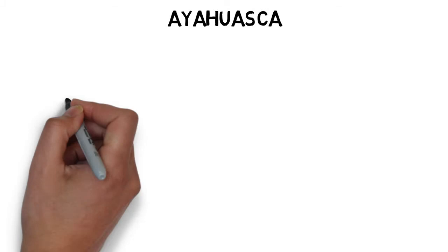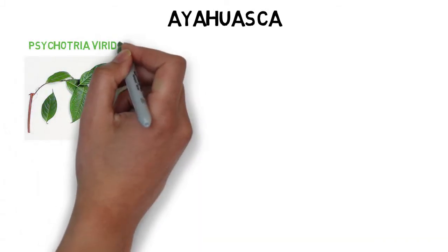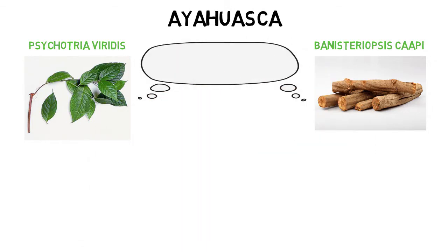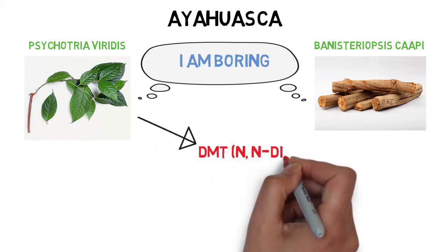Ayahuasca is actually a combination of the leaves of one plant, Psychotria viridis, and the vines of another, Banisteriopsis caapi. Neither of which have any hallucinogenic power on their own, but the leaves do contain DMT.